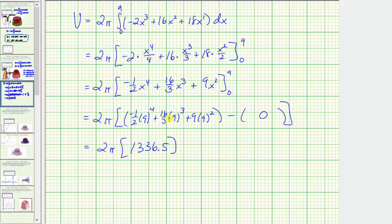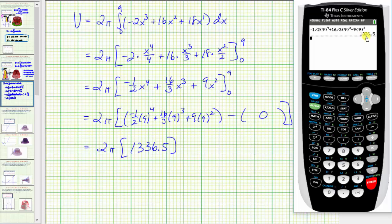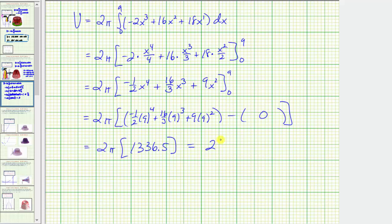We're going to find the exact value here. We'll take 1336.5, multiply by 2. Remember we still have this factor of pi and therefore the exact value is 2673 pi. And this does represent volume and therefore the units would be cubic units.